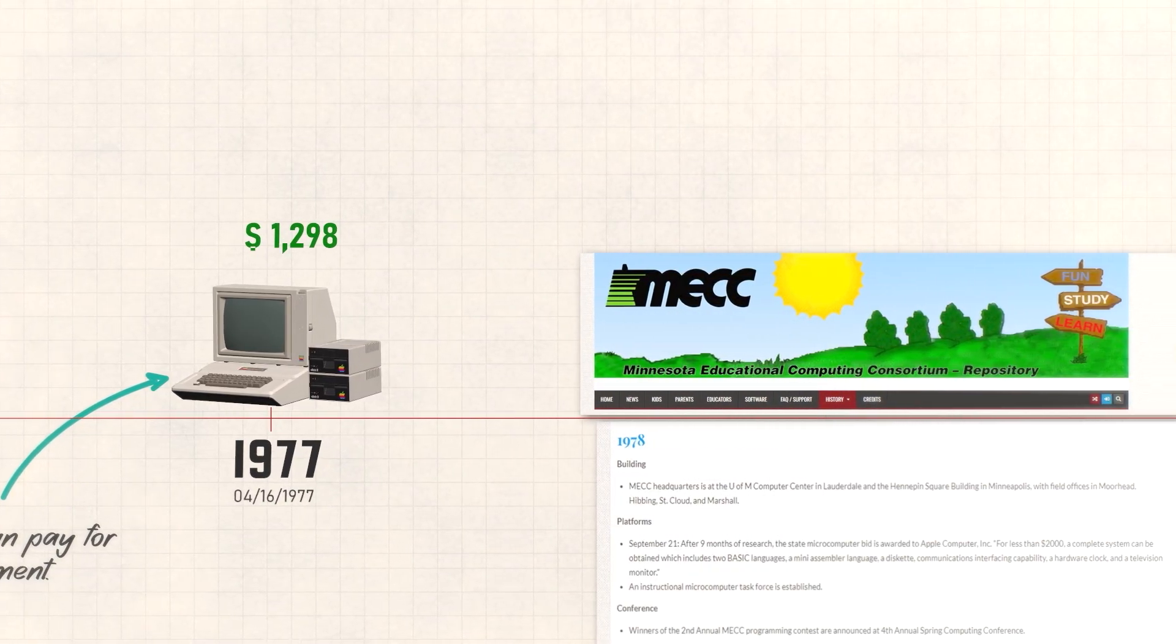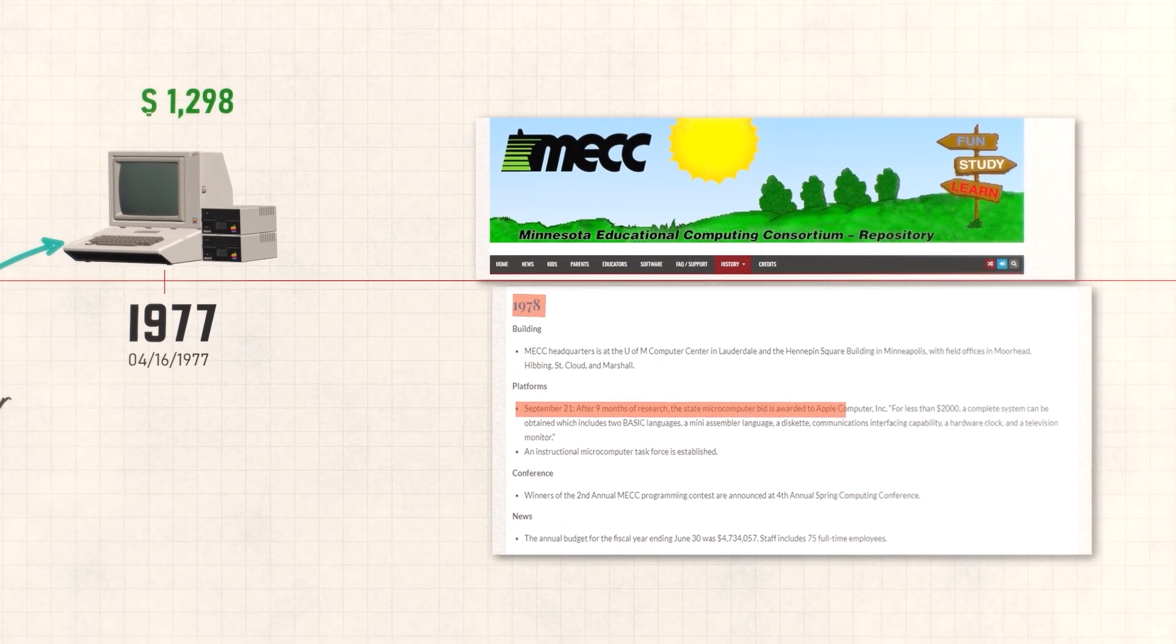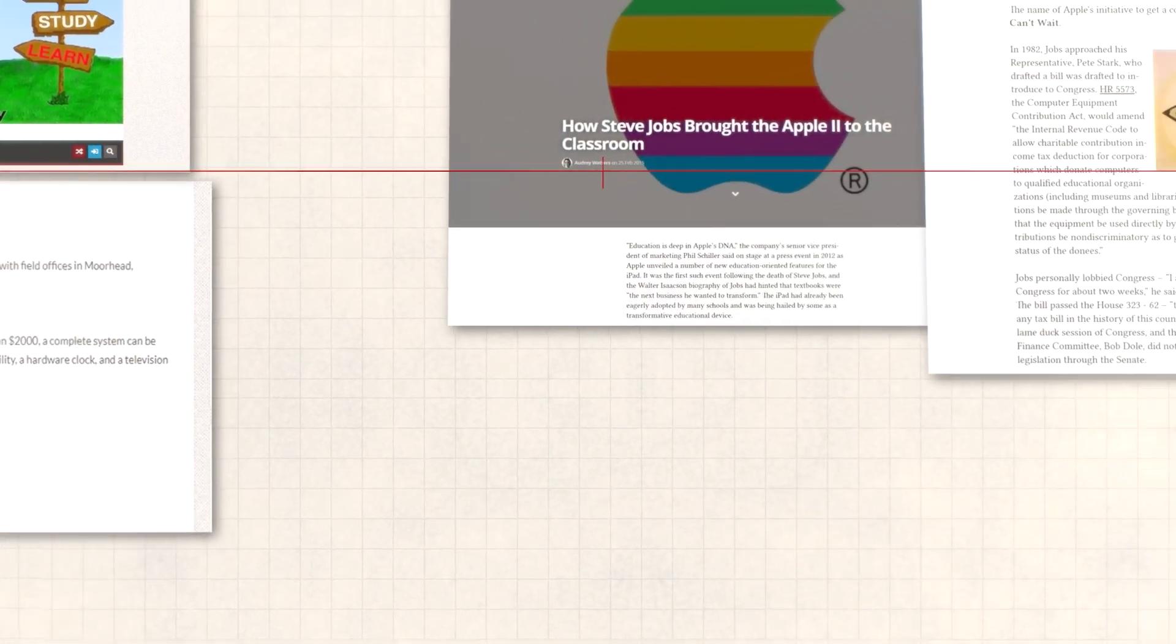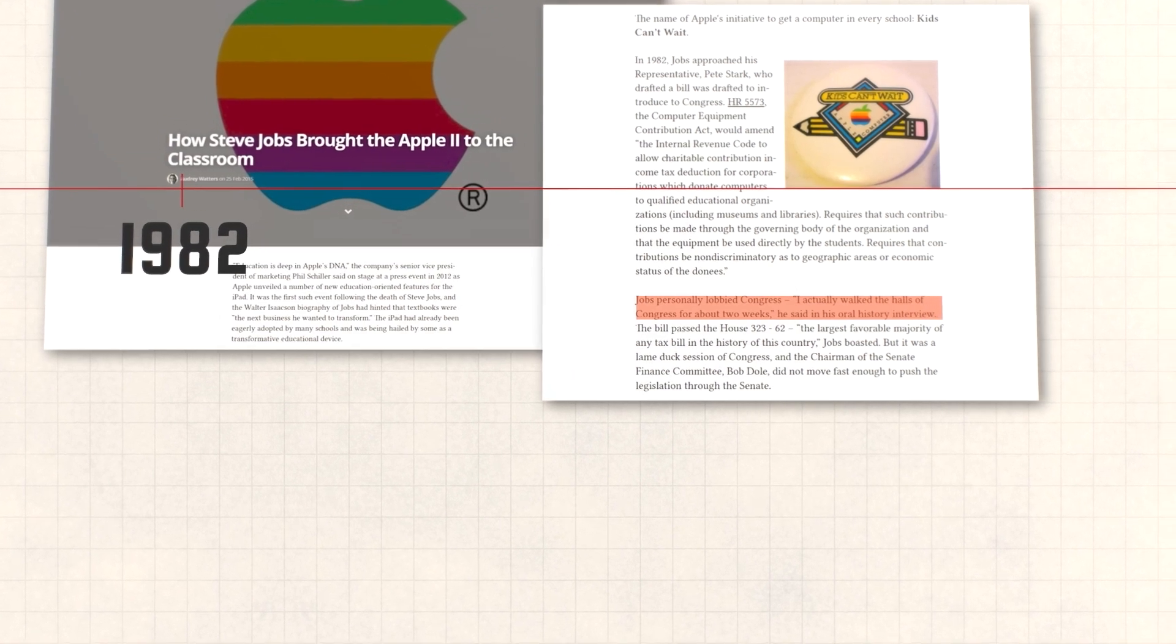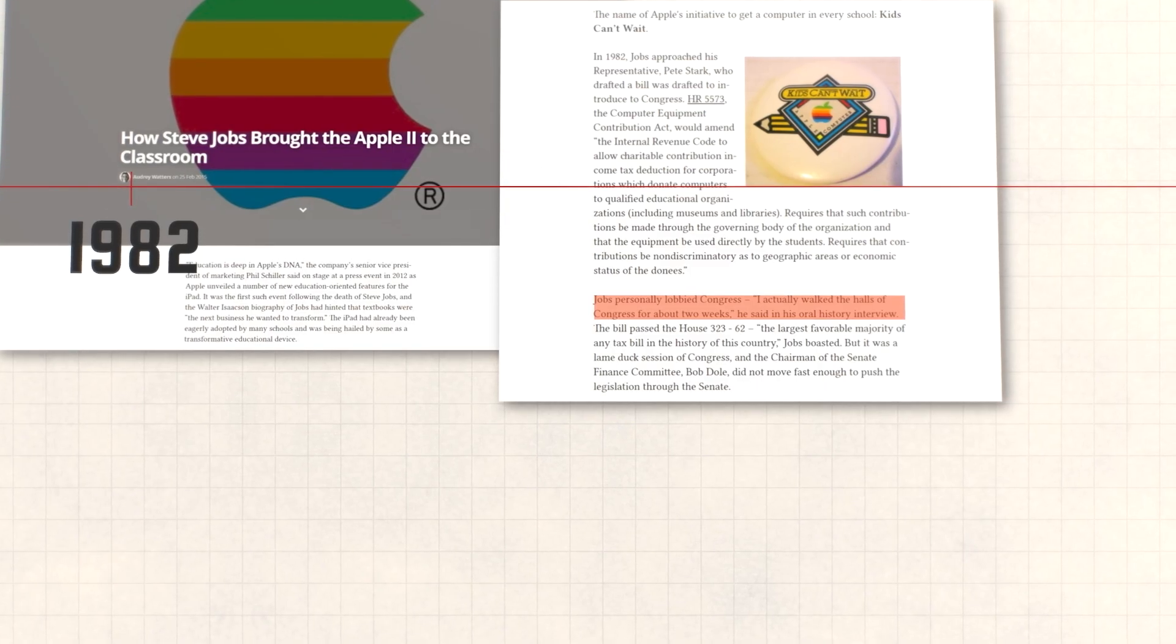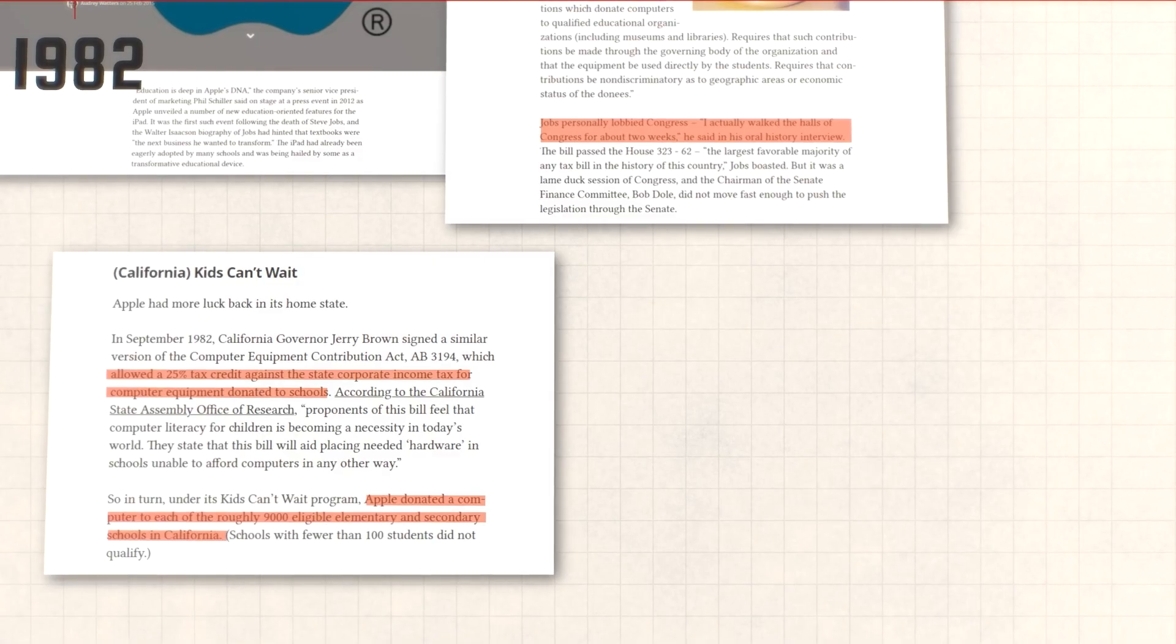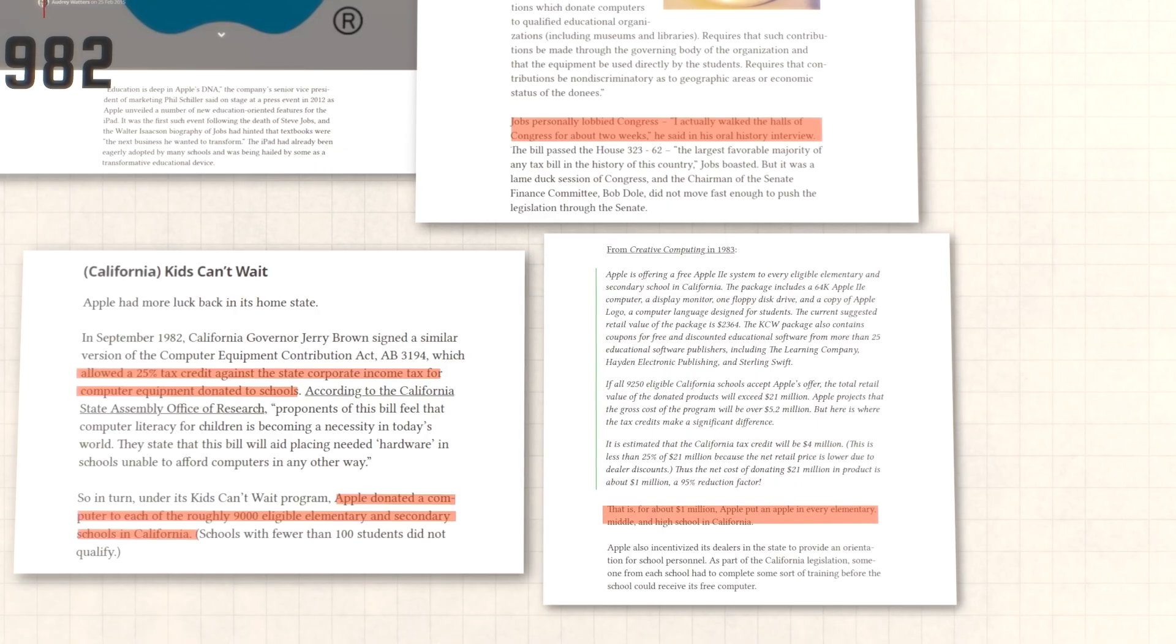And Minnesota's Educational Computing Consortium needs 500 computers for their schools. And Radio Shack wins the bid. Then they blow it off. Too much hassle, not enough profit. So Apple jumps through every hoop. And eventually, they win the contract. And with that single deal, Apple becomes the standard in American education. But Steve Jobs sees the opportunity. Because in 1982, he personally walked the halls of Congress for two weeks, lobbying representatives for tax breaks, not sending lobbyists. Jobs himself, buttonholing politicians about computers in classrooms. So eventually, California caves to his will and creates Kids Can't Wait, a program that lets Apple donate nearly 10,000 computers to schools for tax write-offs.